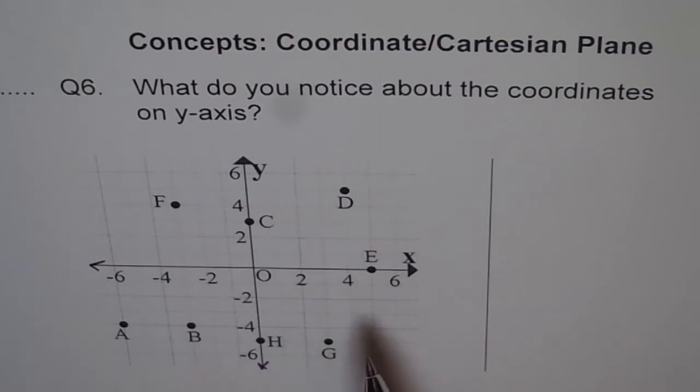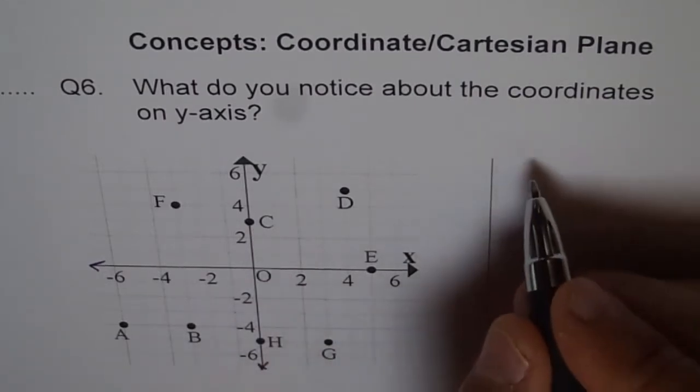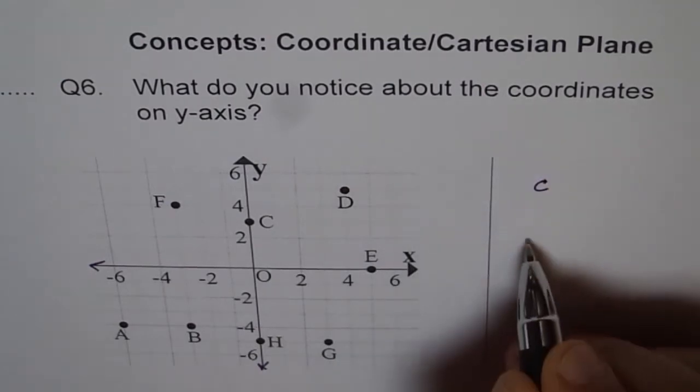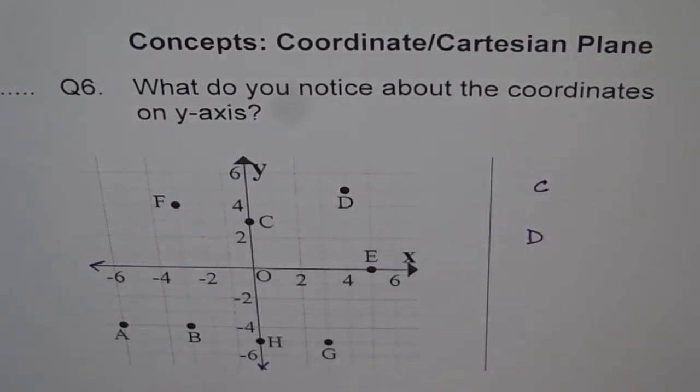Now what are the coordinates on the y-axis? C and D, do you see that? So we have C and D on the y-axis. Can you write down their coordinates, or the ordered pair of C and ordered pair of D?